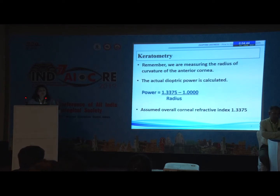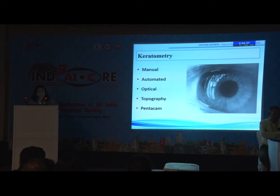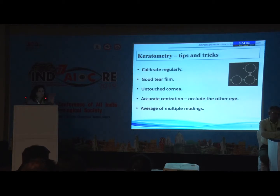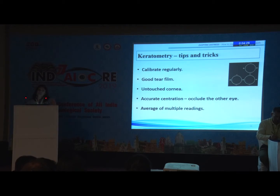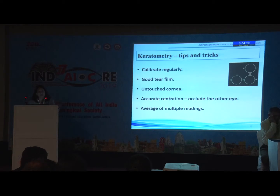Keratometry is based on using the refractive index of the cornea, 1.3375, and using this formula. The actual diopter power is calculated based on that. There are various modalities to measure this. Always remember to calibrate your instrument regularly. Always have a good tear film and untouched cornea. You should not have done any applanation, any gonioscopy, or any contact ultrasonic measurements — no contact procedure should have been done on the cornea before you take your keratometric measurements.